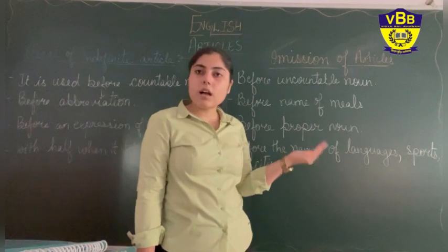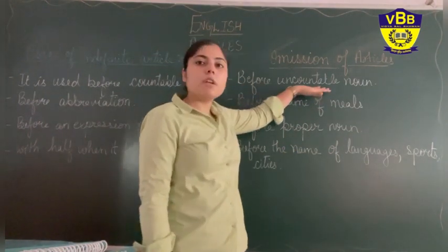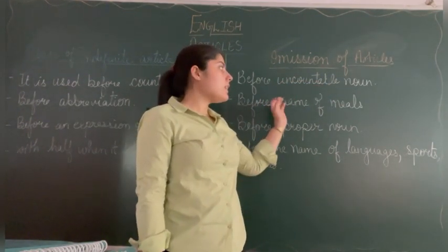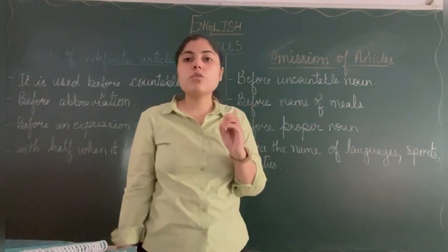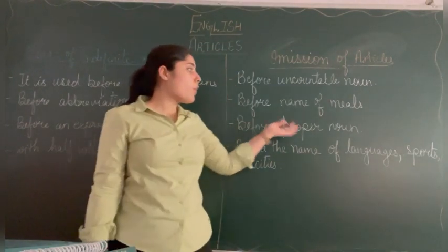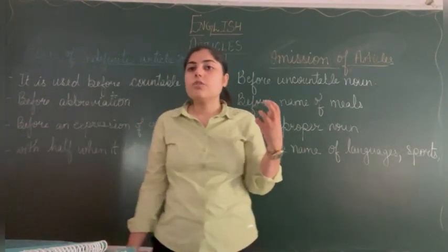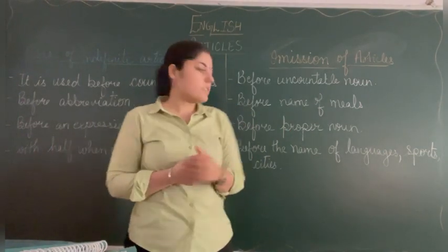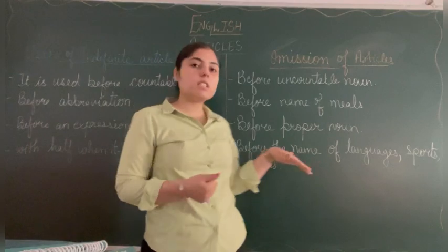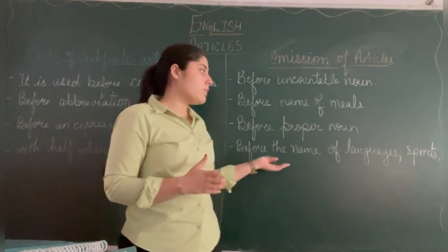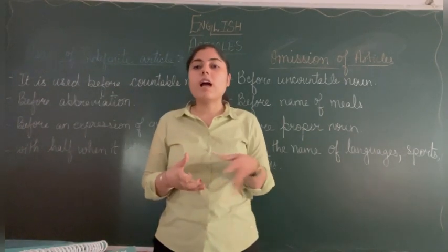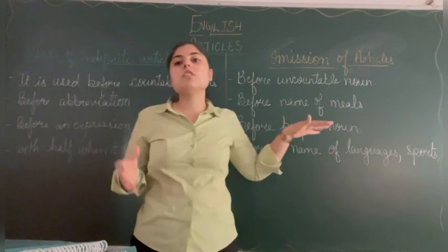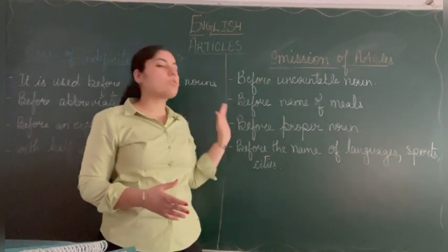Omission of articles means where we cannot use articles. Before uncountable nouns — things which we cannot count — we cannot use articles; for example, with meals like dinner and lunch. Before proper nouns like the name of any person — we cannot say 'a Ram' or 'a Sita'. Before languages, sports, and cities — we cannot say 'a Hindi', 'an English', 'a cricket', 'a football'. Always remember these omissions of articles.